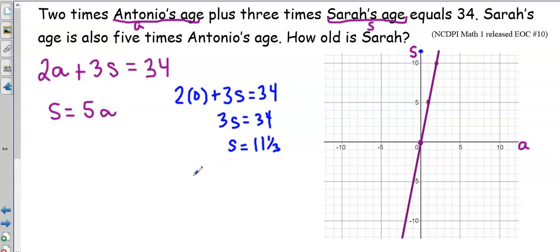And then I'll find my x-intercept. So 2A equals 34. I divide both sides by two, and I have A equals 17, which would be over here. So I'm off my graph, which is unfortunate, but I can go ahead and draw my line.